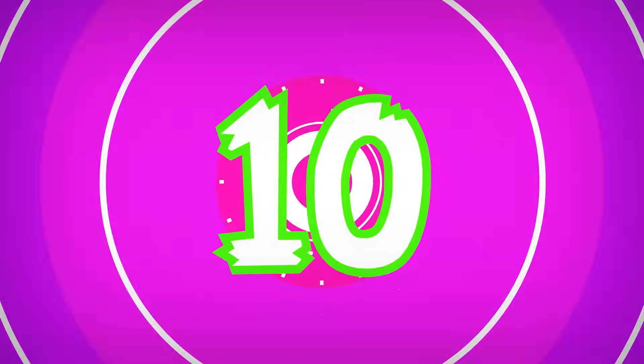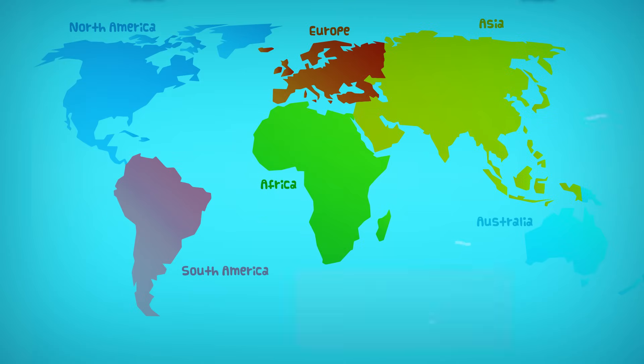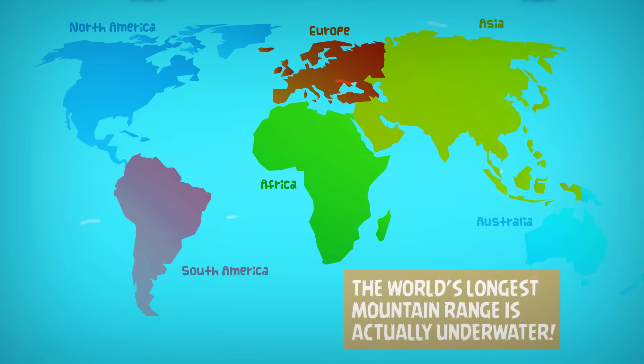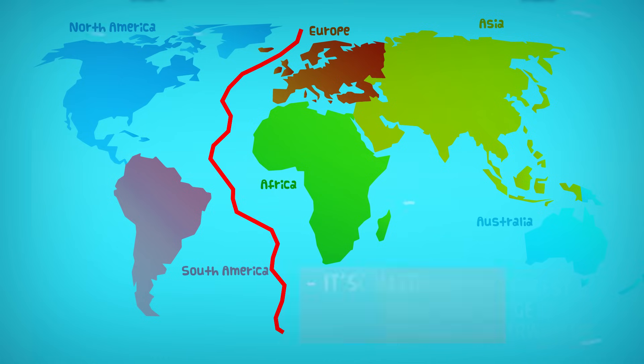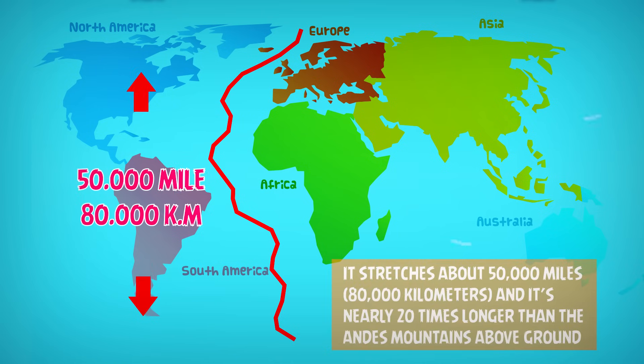Number 10. And finally, my most favourite fact. The Earth's longest mountain range is actually underwater. It's called the Atlantic Mid-Ocean Ridge System. It stretches about 50,000 miles or 80,000 kilometers, and it's nearly 20 times longer than the Andes Mountains above ground.